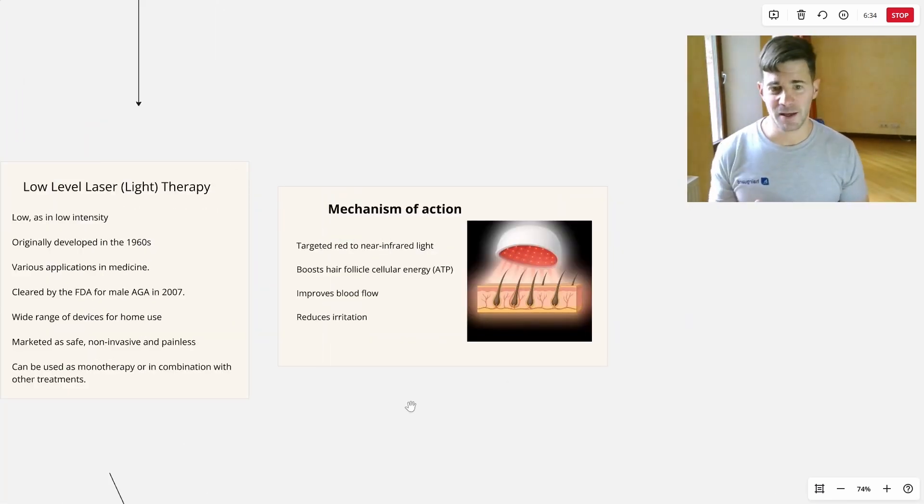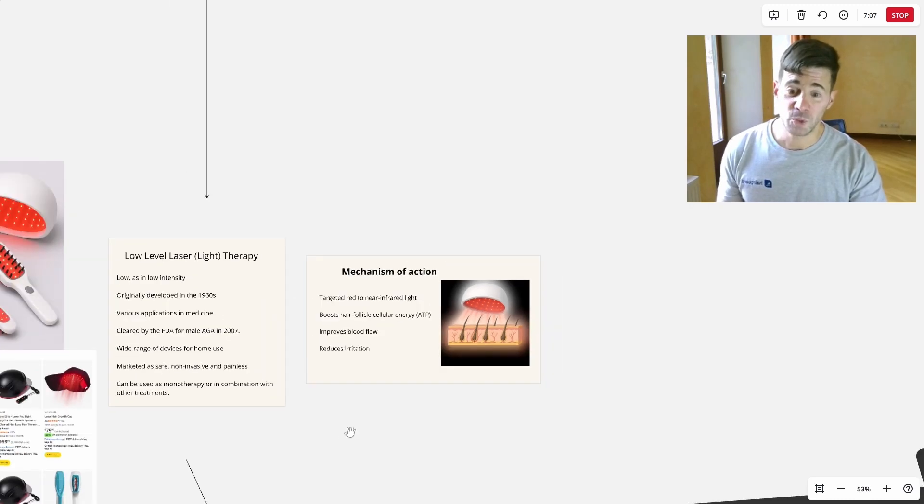We don't know for sure what the mechanism of action is, but these devices emit red to infrared light. On one hand, you have violet light, ultraviolet. And then on the other side of the visible spectrum, you have red infrared. These are at the top side of the spectrum, red and infrared light. It's generally believed that they boost the hair follicle cellular energy, ATP. With more energy, the follicles are able to make thicker, longer hairs. They can extend their anagen growth phase. They're also thought to improve blood flow and reduce irritation.